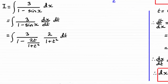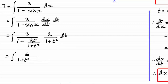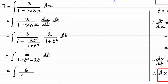Now it's just a question of simplifying. We get the integral of 3 times 2 — that's 6 — over the expression (1 plus t²) times (1 minus 2t/(1 plus t²)). The (1 plus t²) factors cancel in that second term, leaving just minus 2t. Tidying up gives the integral of 6 all over (t minus 1)², since (t minus 1)² expands to t² minus 2t plus 1, with respect to t.